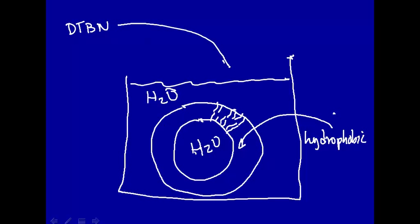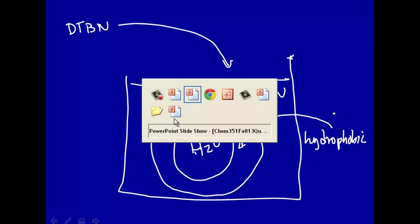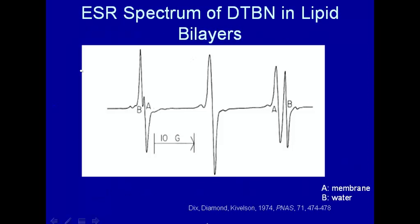Now if we add di-tertiary butyl nitroxide into this sample, here we'll have di-tertiary butyl nitroxide in the water phase, but it'll also go into the membrane phase, which is a different environment, and it might have a different ESR spectrum. Well, let's take a look. Yes it is.